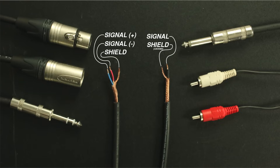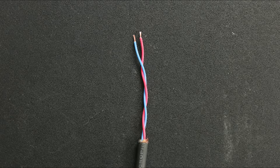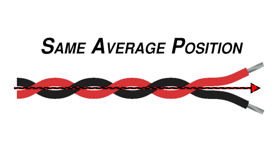Looking back at these audio cables, we can see that each of them consists of two conductors. The XLR and TRS cables do both have a shield, but the shield is irrelevant to its ability to form a balanced connection. We can also see that the wires are twisted in the XLR and the TRS cables. This helps to ensure that the wires occupy the same average position over the length of the cable, so that any noise from nearby electronics will be equal in both wires.